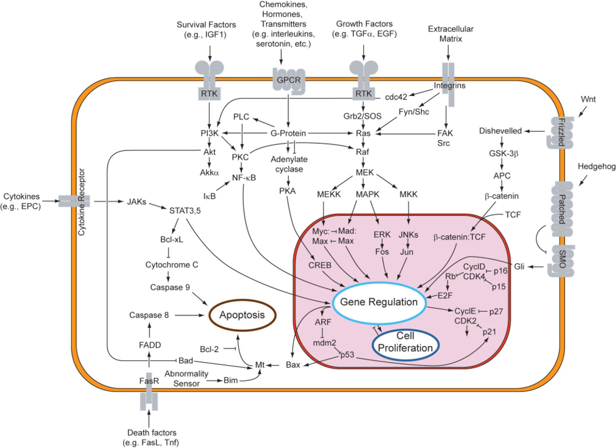In intracrine signaling, once inside the cell, a signaling molecule can bind to intracellular receptors, other elements, or stimulate enzyme activity (e.g., gases). The intracrine action of peptide hormones remains a subject of debate. Hydrogen sulfide is produced in small amounts by some cells of the human body and has a number of biological signaling functions. Only two other such gases are currently known to act as signaling molecules in the human body: nitric oxide and carbon monoxide.